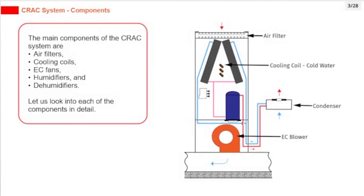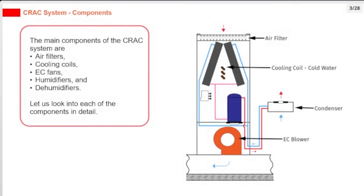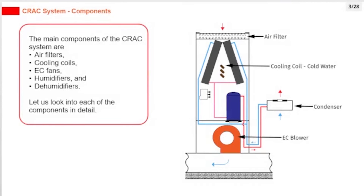The main components of the CRAC system are air filters, cooling coils, EC fans, humidifiers, and dehumidifiers. Let us look into each of the components in detail.